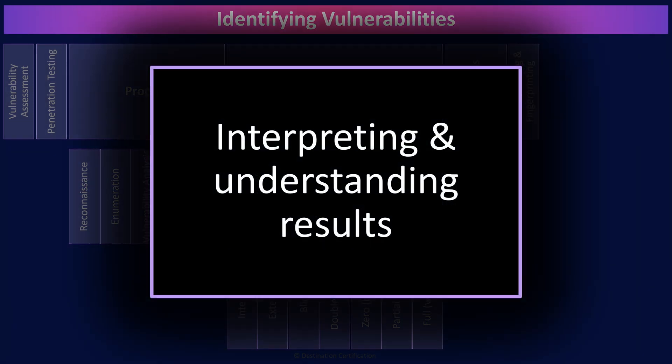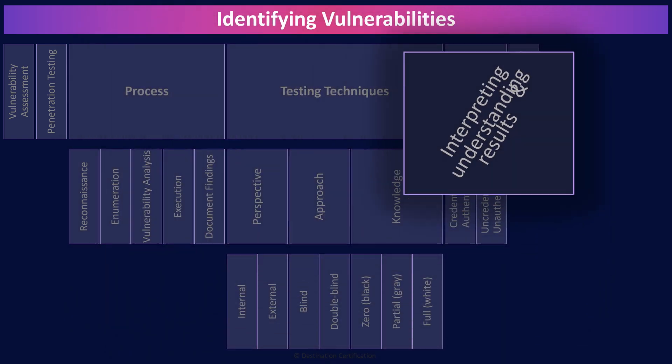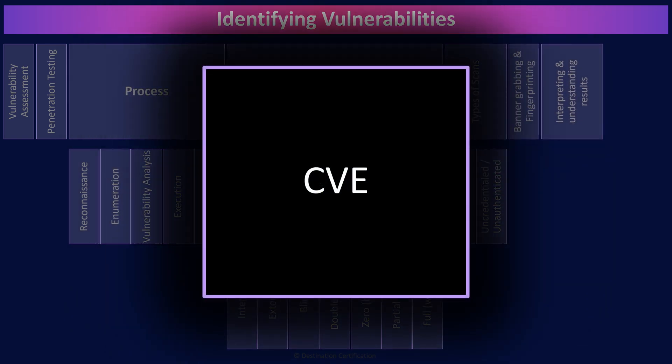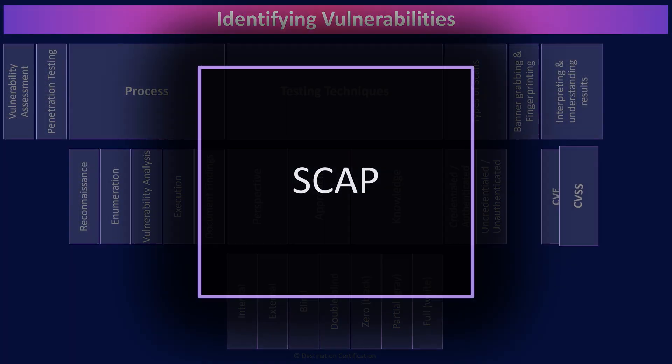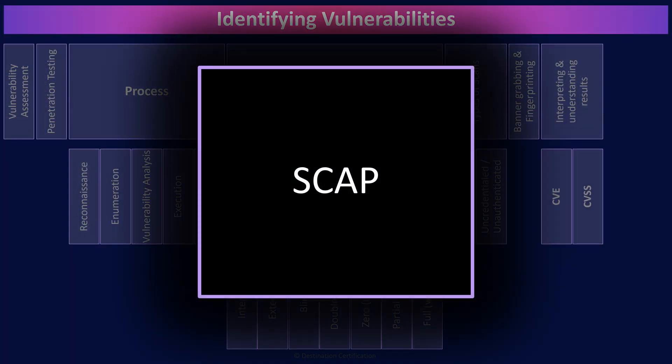When reporting on vulnerabilities, there are a couple of important numbers that should be included. The CVE, or Common Vulnerabilities and Exposures number, is a unique identifier for each vulnerability, maintained in a public database. Each discovered vulnerability has a unique CVE number assigned to it. The CVSS, or Common Vulnerability Scoring System, is a standard for assessing the severity of a vulnerability — from zero, meaning no big deal, all the way up to 10, meaning critical. SCAP, the Security Content Automation Protocol, is a collection of interoperable specifications to help organizations automate vulnerability management and policy compliance evaluation.